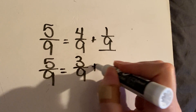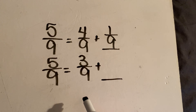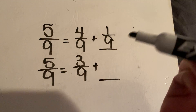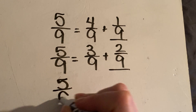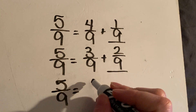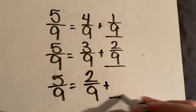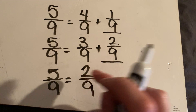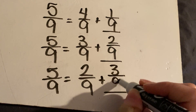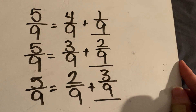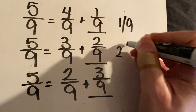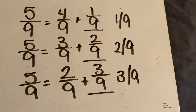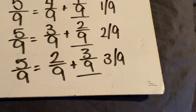Then it'll go to another line and say something like three ninths plus what is five ninths. Three plus what is five? Three plus two is five, so two ninths goes here. Then it'll do it again: five ninths equals two ninths plus what? Two plus three is five, so three ninths would be the answer. Remember when writing your answers on your Google Form you're just using the slash — like one ninth would be 1/9, two ninths 2/9, three ninths 3/9.